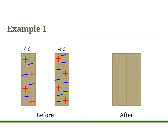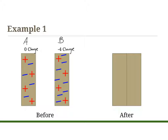Welcome back. I suggest you copy examples one, two, and three down — they will help you when you do the homework. In example one, I have two objects that are not touching. Object A has four positive things and four negative things — that's a zero charge. Object B has four positive things and eight negative things, so that means it has a negative four charge. When they come into contact, the positives have to stay the same — they can't move.